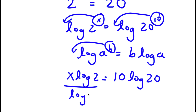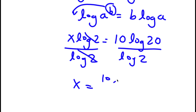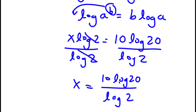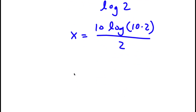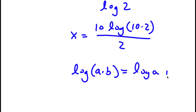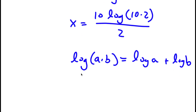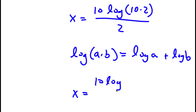Now, if I divide both sides by log 2, these two cancel out, and now I'm left with x is equal to 10 times log 20 over log 2. Now, log 20, I'm going to rewrite that as log 10 times 2 over log 2. And if I have something in the form log a times b, it's simply equal to log a plus log b. So in this case, log 10 times 2 is going to equal log 10 plus log 2.